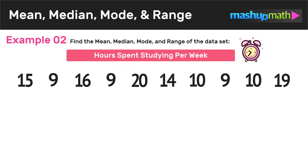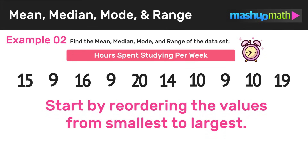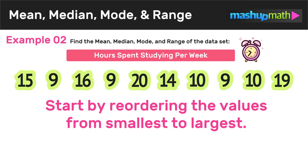Here's one more example where we want to find the mean, median, mode, and range of a given data set. In this example, our data set is the hours spent studying per week. We're looking at a larger data set than we had in the last example. However, the process for finding mean, median, mode, and range is still going to be exactly the same. Just like the last example, we are going to start by reordering the values from smallest to largest.